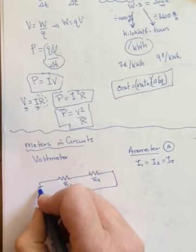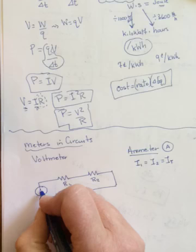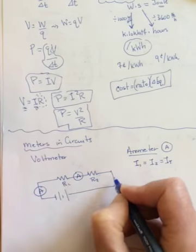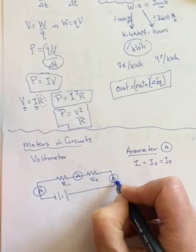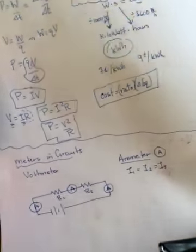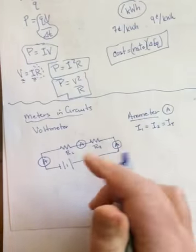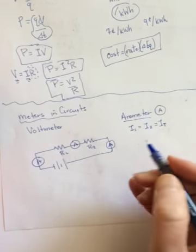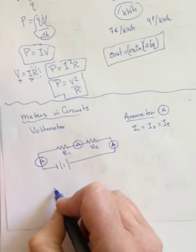So really, it matters absolutely not at all if I were to put it here, put it here, or put it here, because the current doesn't change in a series circuit. All of those three places would still allow me to measure the current through R1, because all the I's are the same.